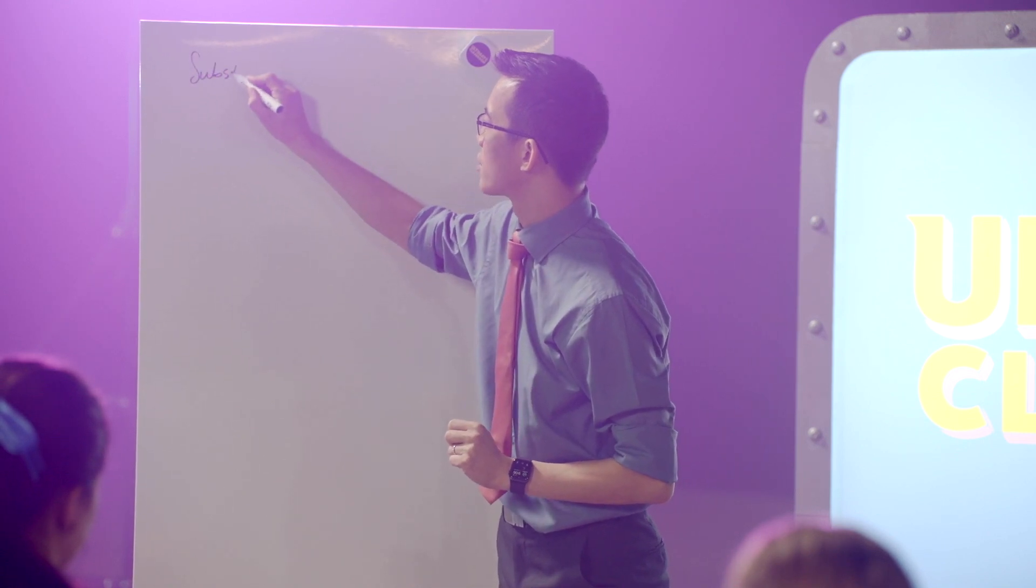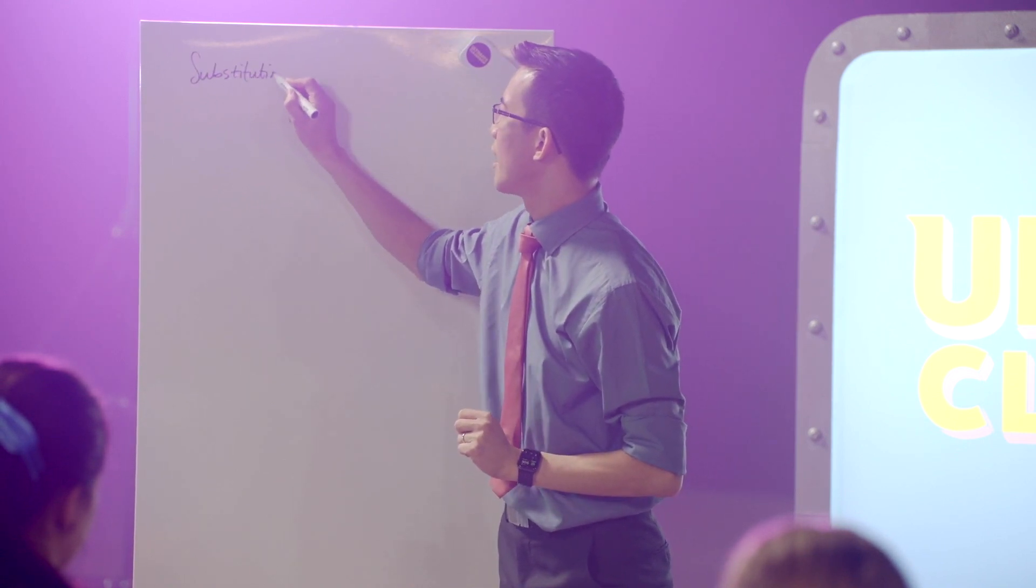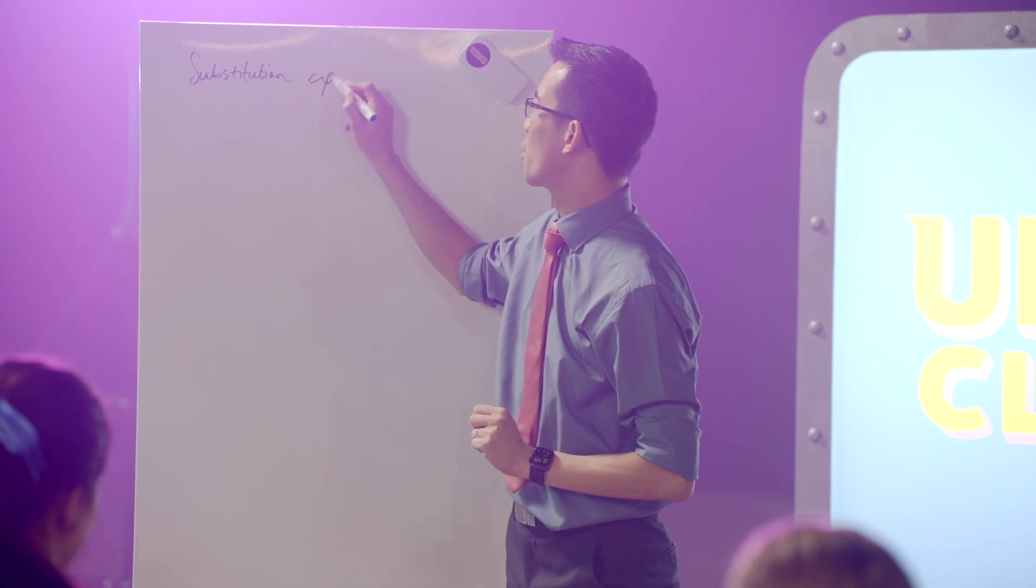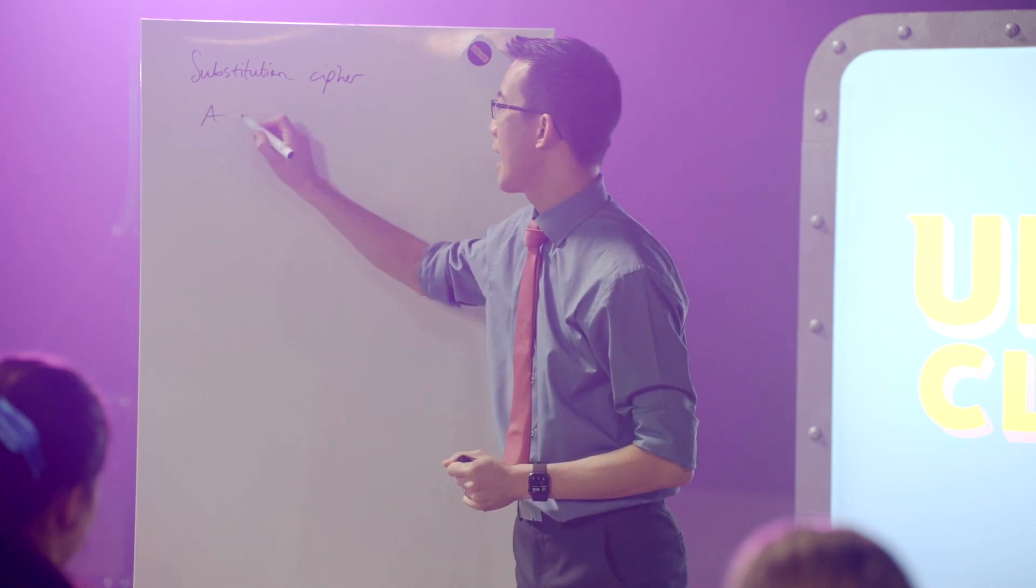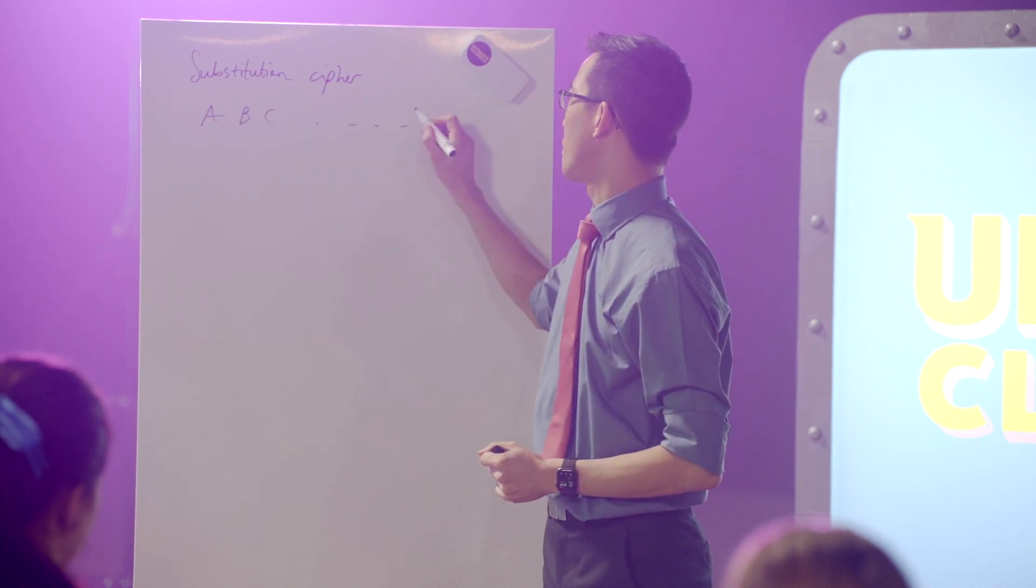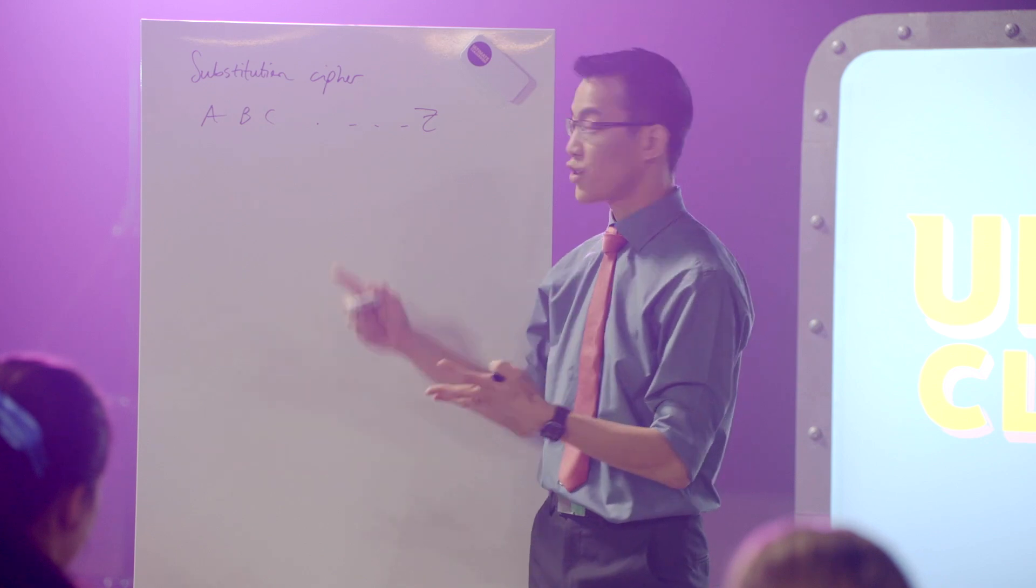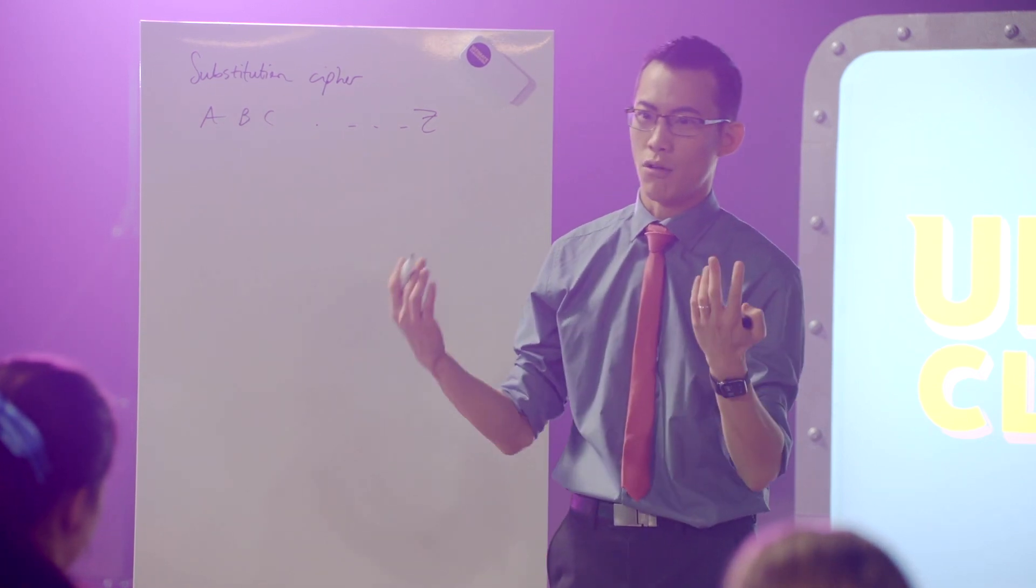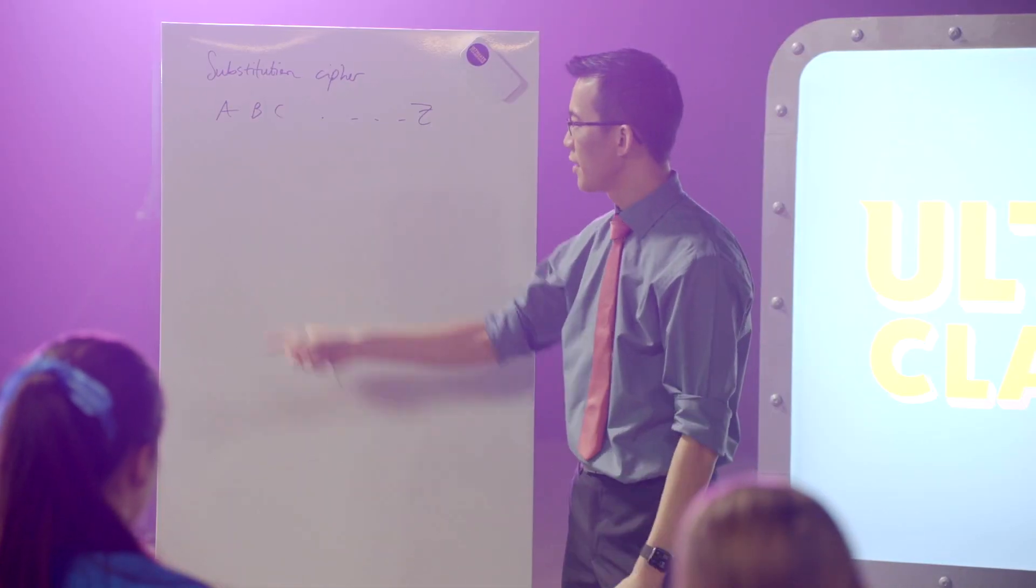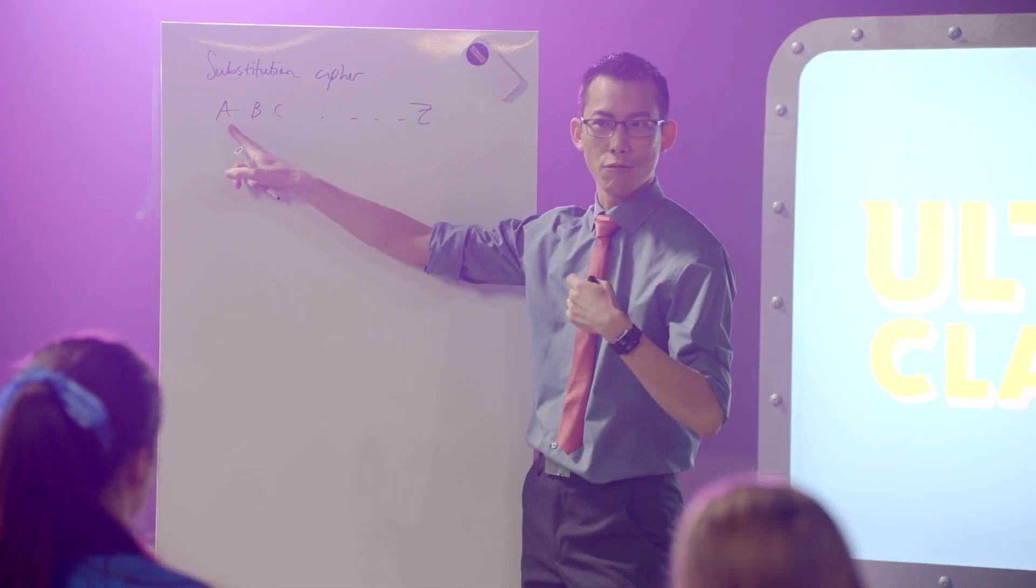A substitution cipher can work very simply. If we take every letter in the alphabet, say for example A, B, C all the way up to Z, we can just substitute every single one of these letters for a number or a different symbol or a different kind of letter. For example, if we were to take all the letters A to Z and offset them by five, the first letter would be written as the sixth letter which would be an F.